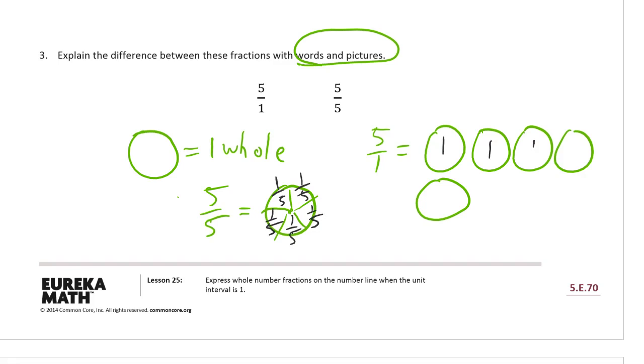And, these are all just whole ones. And, now I need to say. Five over one, five ones is five wholes. And, five fifths is only one whole.